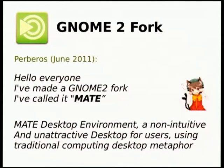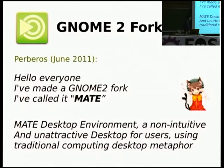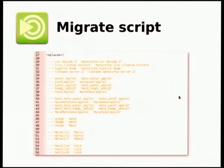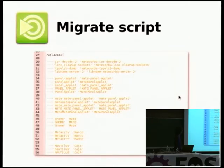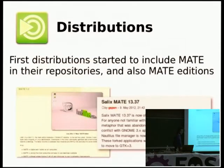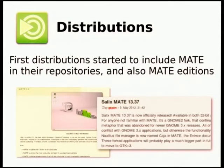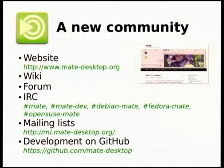The first description of the project was an active desktop using traditional computing metaphor. The project was really a hack because it was based on a migrate script, just replacing all occurrences in the code with MATE. So it was not such good code. But even so, the first distributions that were not happy with GNOME 3, like Linux Mint and Salix, started to include MATE and release it in their repositories and also as a MATE edition on their DVDs.